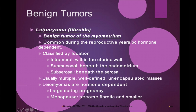Now let's look at leiomyoma, also referred to as fibroids. This is a benign tumor of the myometrium. It's common during the reproductive years because these tumors are hormone dependent — they can increase or decrease in size based on estrogen and progesterone levels.